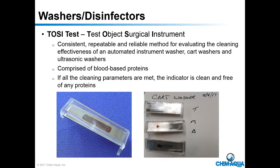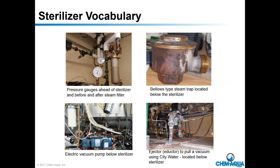Inside the sterilizer room — which is usually very small, very hot, and very compact — looking above the sterilizer, you'll see a sting filter with a small pressure gauge before and after so you can tell when it needs replacing.